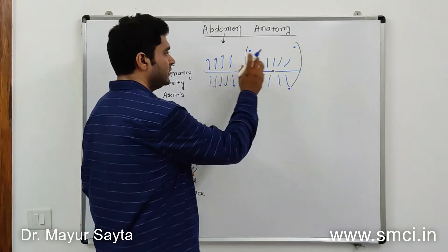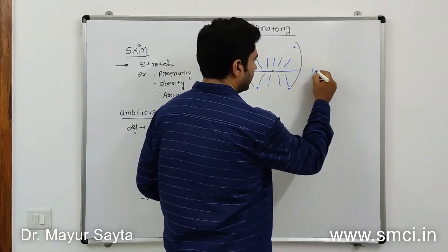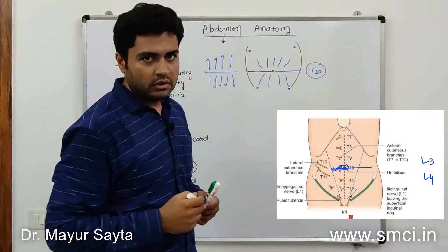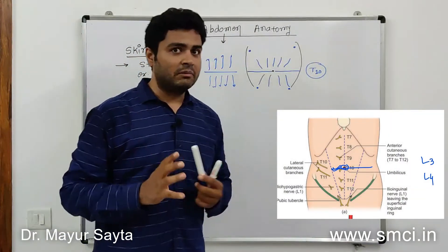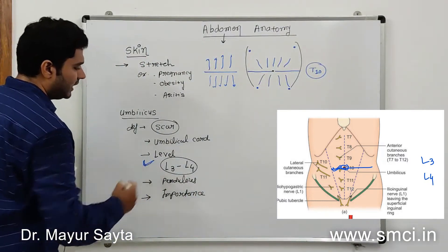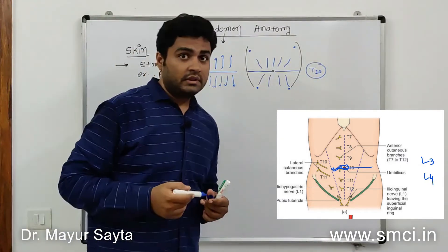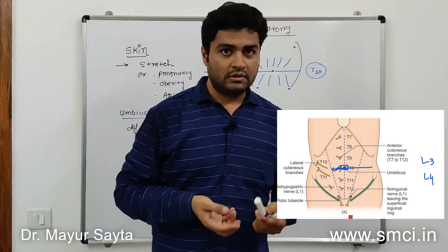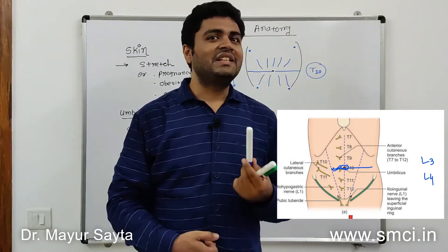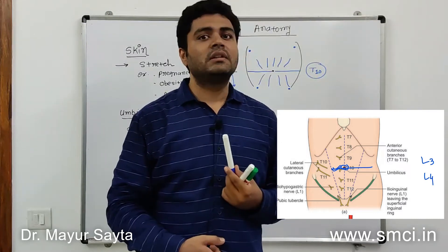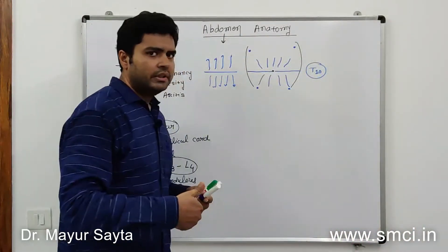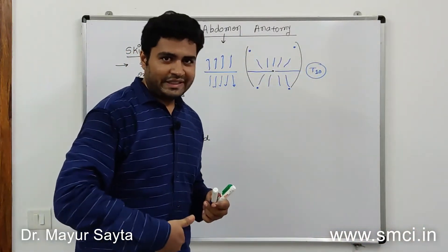The nerve supply of the umbilicus is from the T10 thoracic segment. The level of the umbilicus is at the lumbar vertebrae, but the nerve supply — the sensation from the umbilicus — is carried by the T10 thoracic nerve.